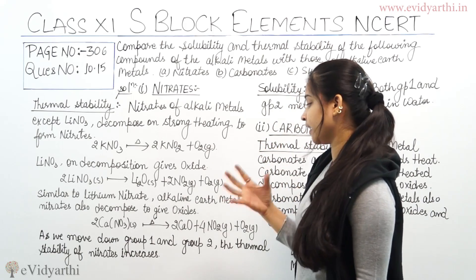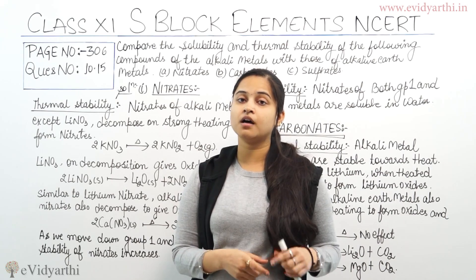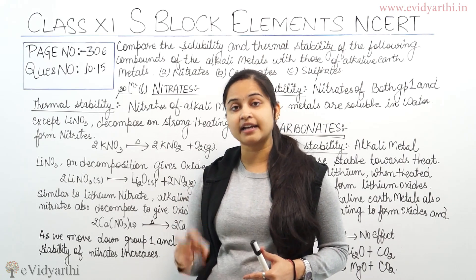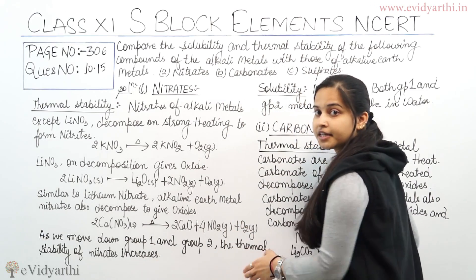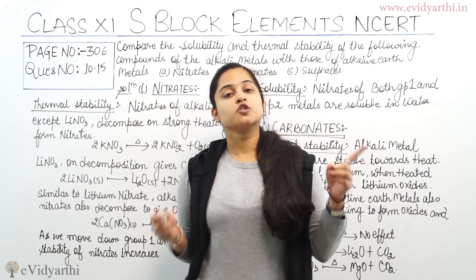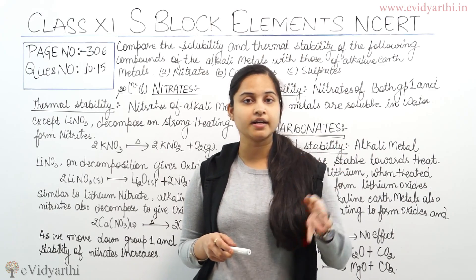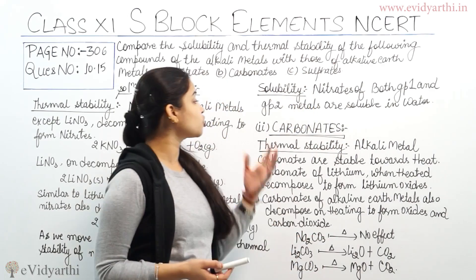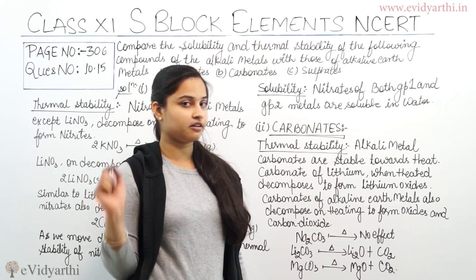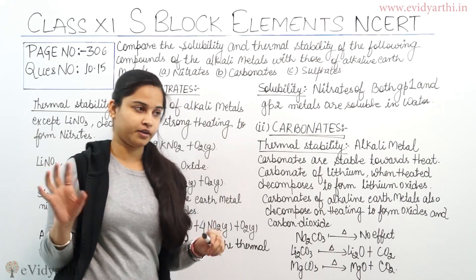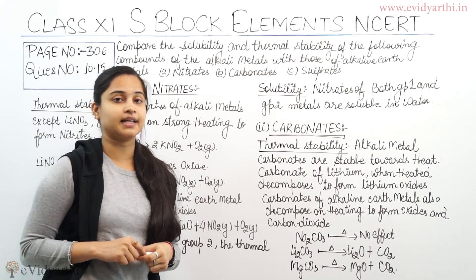As we move down group 1 and group 2, the thermal stability of their nitrates increases. Regarding solubility, the nitrates of both alkali metals (group 1) and alkaline earth metals (group 2) are soluble in water.